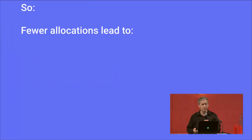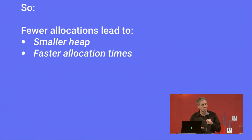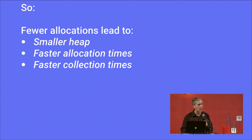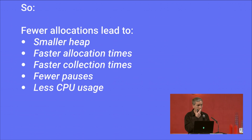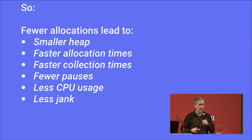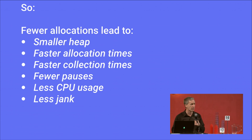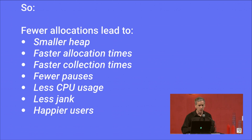When you have fewer allocations, you get a smaller heap, faster allocation times because there's less work to find free space, faster collection times, fewer pauses, and less CPU usage from mark-sweep-collect cycles running in the background. Overall you get less jank — especially avoiding GC for alloc, which will cause you to miss a frame, particularly on Dalvik. In general, all of this leads to happier users and world peace. I leave the last item as an exercise for the reader.